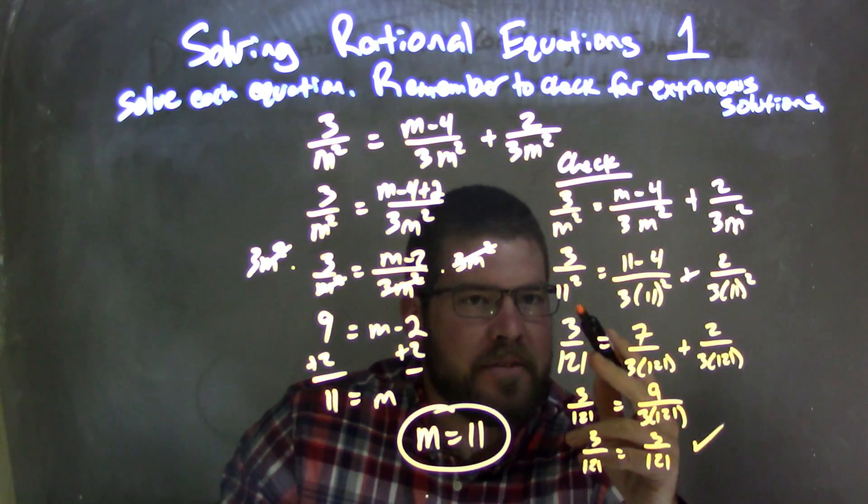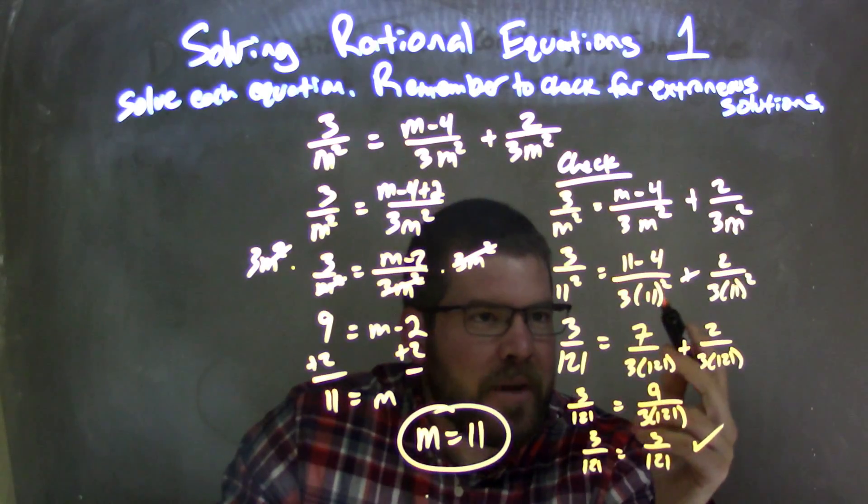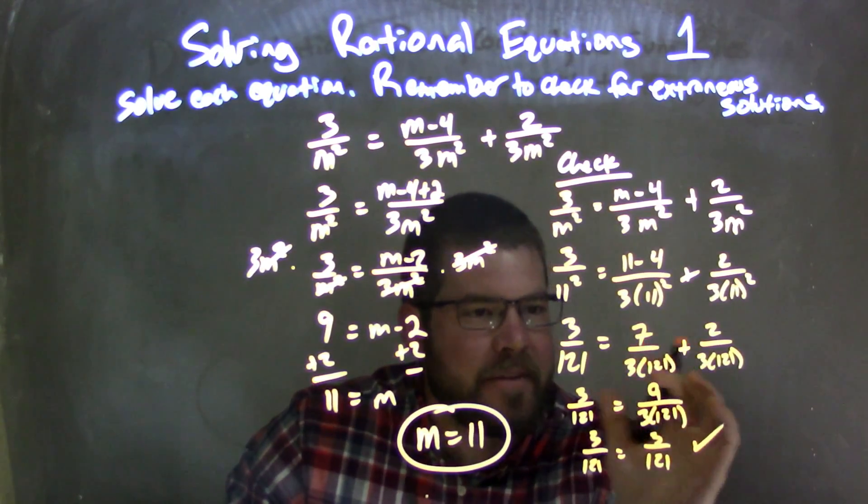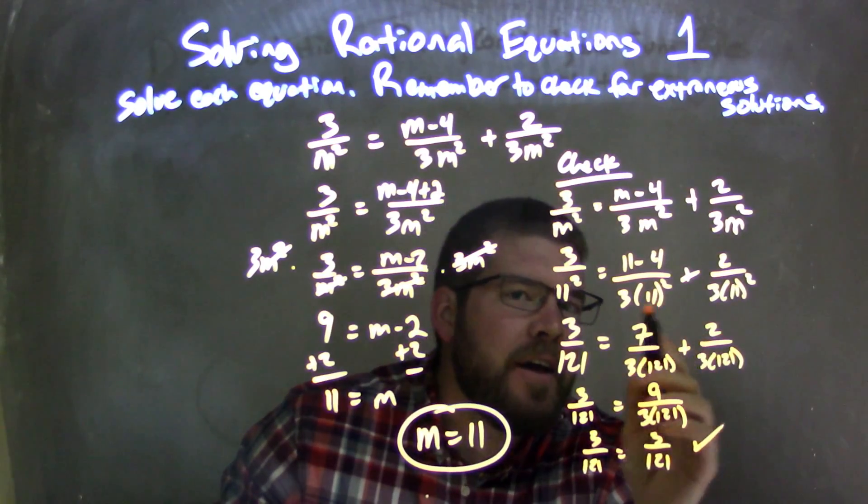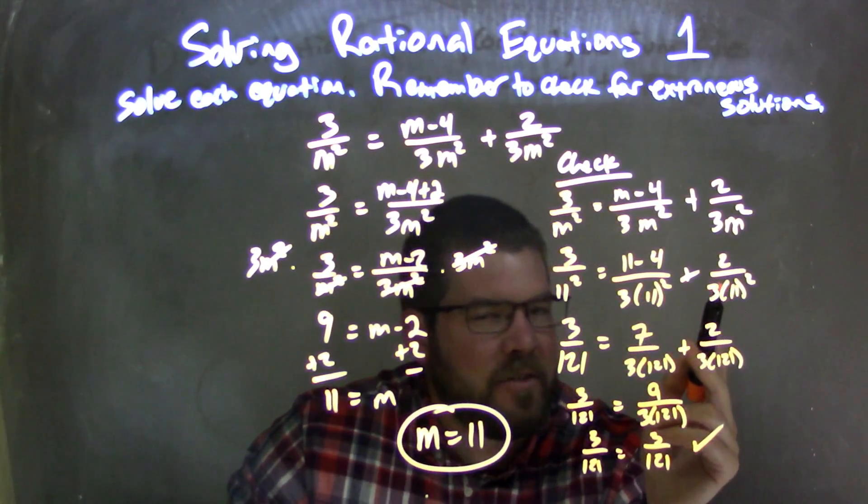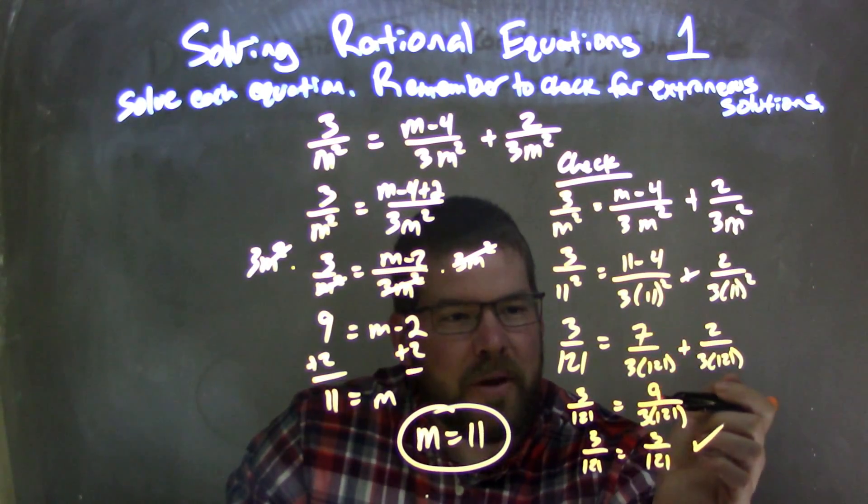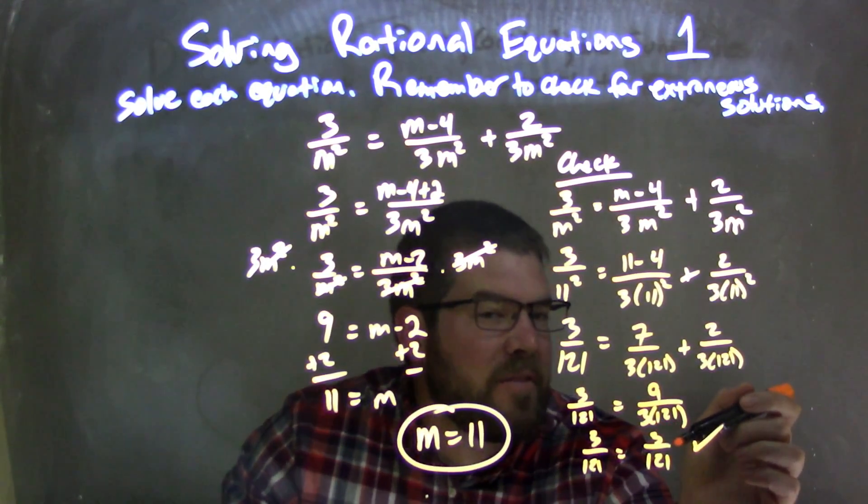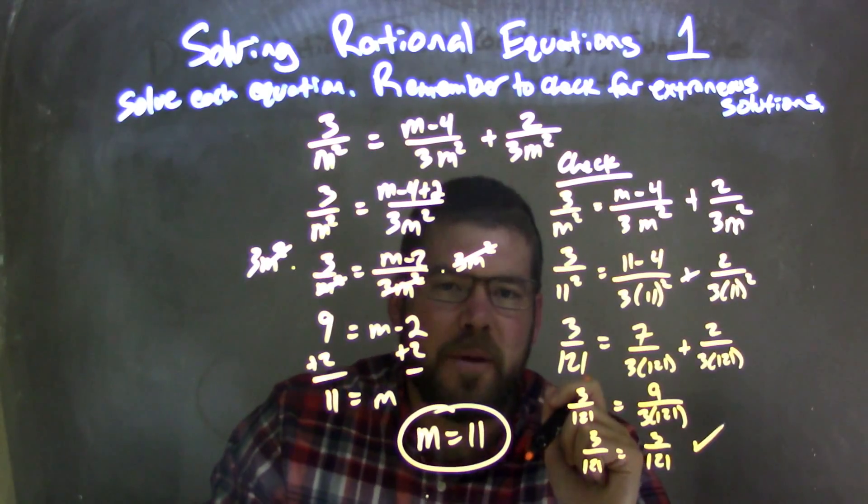What I was saying about the 11 squared and leaving it like that is we didn't actually have to distribute 3 times 121. I like to keep it separate sometimes if I know I'm going to cancel it out. I probably could have just left 11 squared and saw that they were the same, right? It would have been 3 over 11 squared equals 3 over 11 squared. Either way, we confirmed m equals 11.